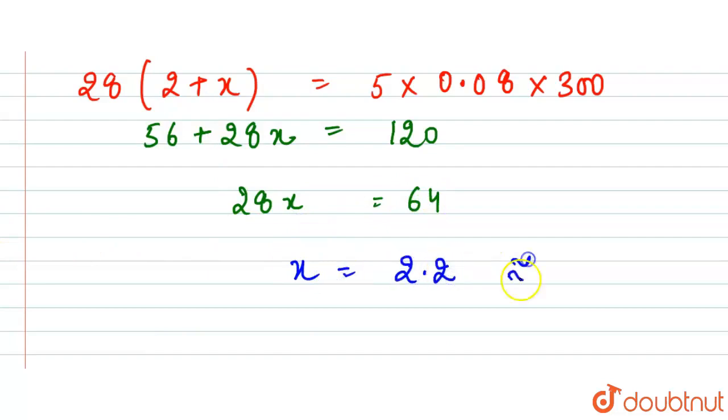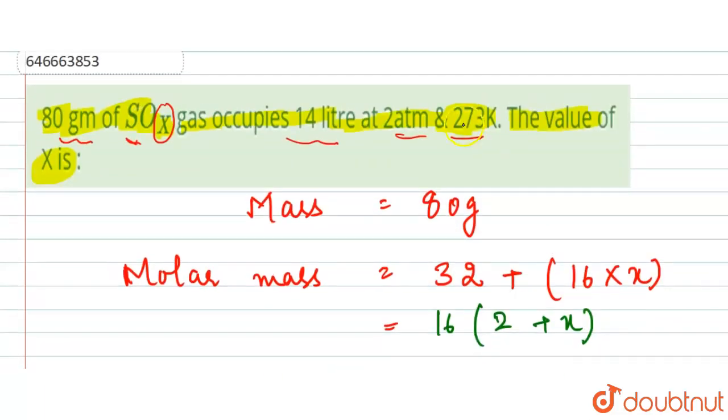From here we get the x value to be 2.28, so we'll take it approximately equal to 2. The x value is 2. Thank you.